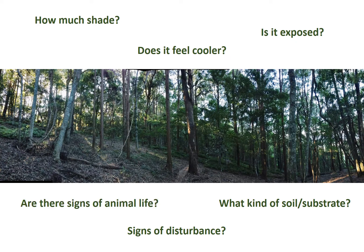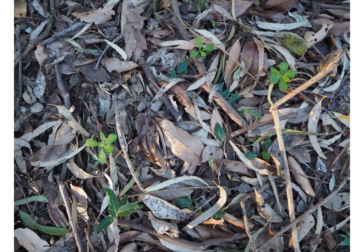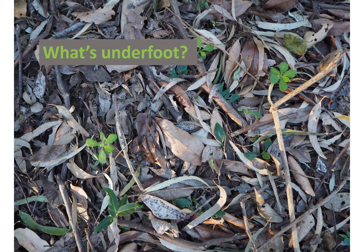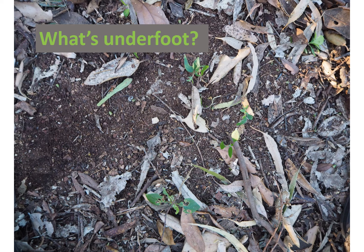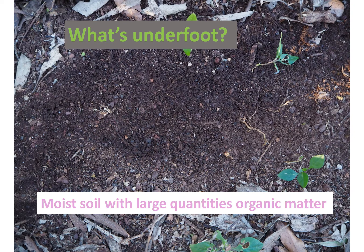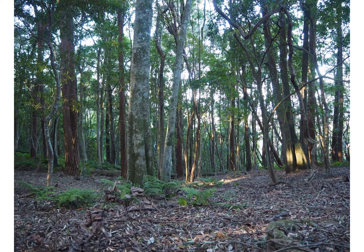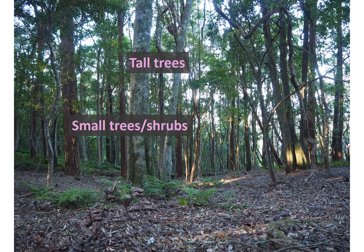You might also like to look for signs of animal life. If we look at what's underfoot here and move away the leaf litter, you can see there's quite a bit of leaf litter and little pieces of bark and twig. Underneath there's a moist soil with large quantities of organic matter — it's quite dark. As far as vegetation structure, there are lots of tall trees here, a sparse layer of small trees and shrubs, quite a few vines, and a sparse ground cover.